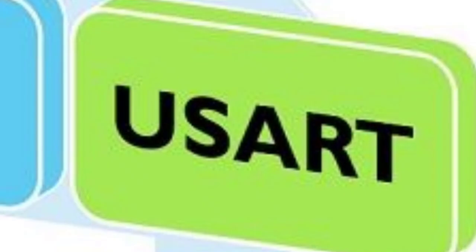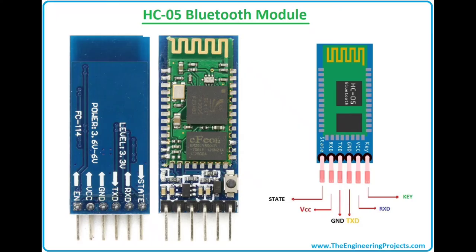HC-05 communicates using the serial port, which stands for Universal Asynchronous and Synchronous Receiver Transmitter (USART). HC-05 can be operated on 4 to 6 volts and 30 milliamperes of current. It can be easily interfaced with a laptop or mobile phone.